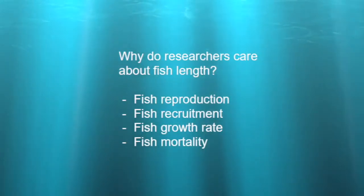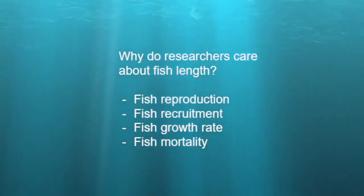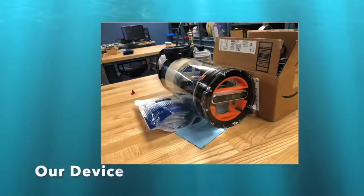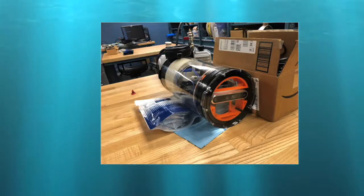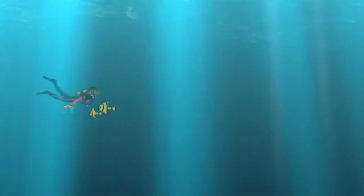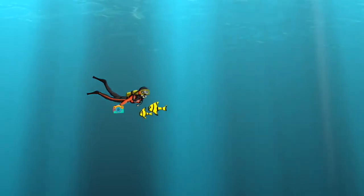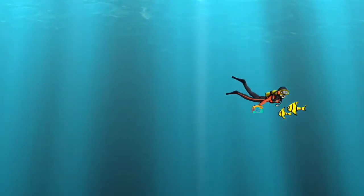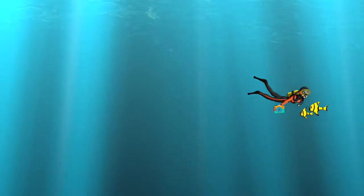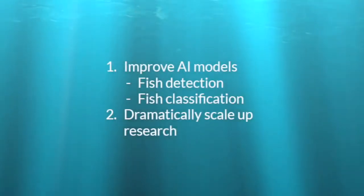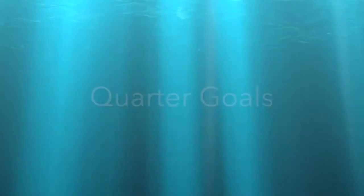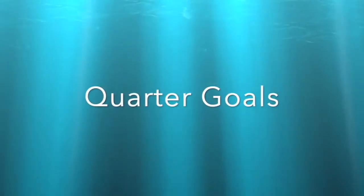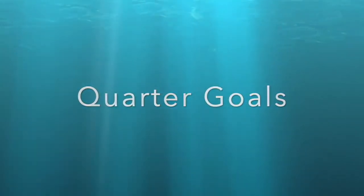While prior approaches to solving this problem involve bulky and inaccurate stereo rigs and laser calipers, we are bringing cutting-edge 3D imaging technology below the surface of the ocean in the form of a handheld underwater imaging device. With this device, we can directly measure geometric and volumetric information about the fish in their environment. The extra dimension in our data will improve AI models for fish detection and classification, which will allow research to drastically scale up in productivity. This quarter, our team has specifically focused on automating the length detection process given images of fish.